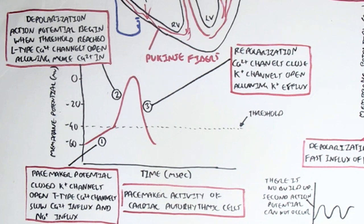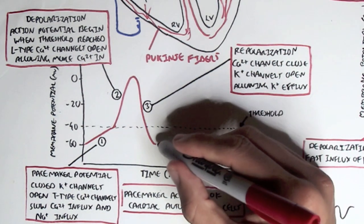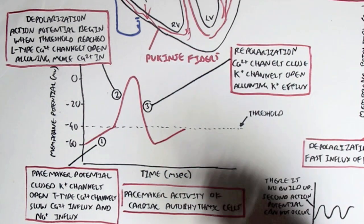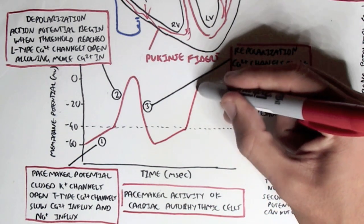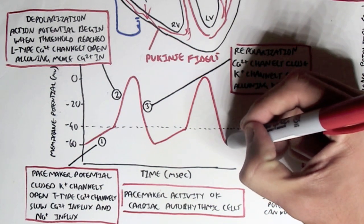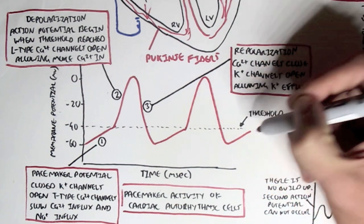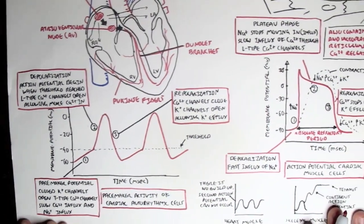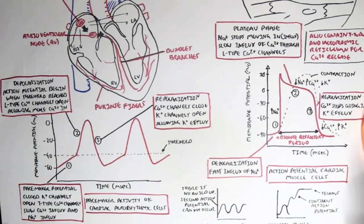This process keeps repeating itself: at negative 60, the pacemaker potential gradually rises to the threshold, causing depolarization which generates an action potential. After the action potential, it repolarizes back down to negative 60, and then the pacemaker potential begins again — the cycle continues. This is how the pacemaker cells generate action potentials, which are then passed on to the cardiac muscle cells.